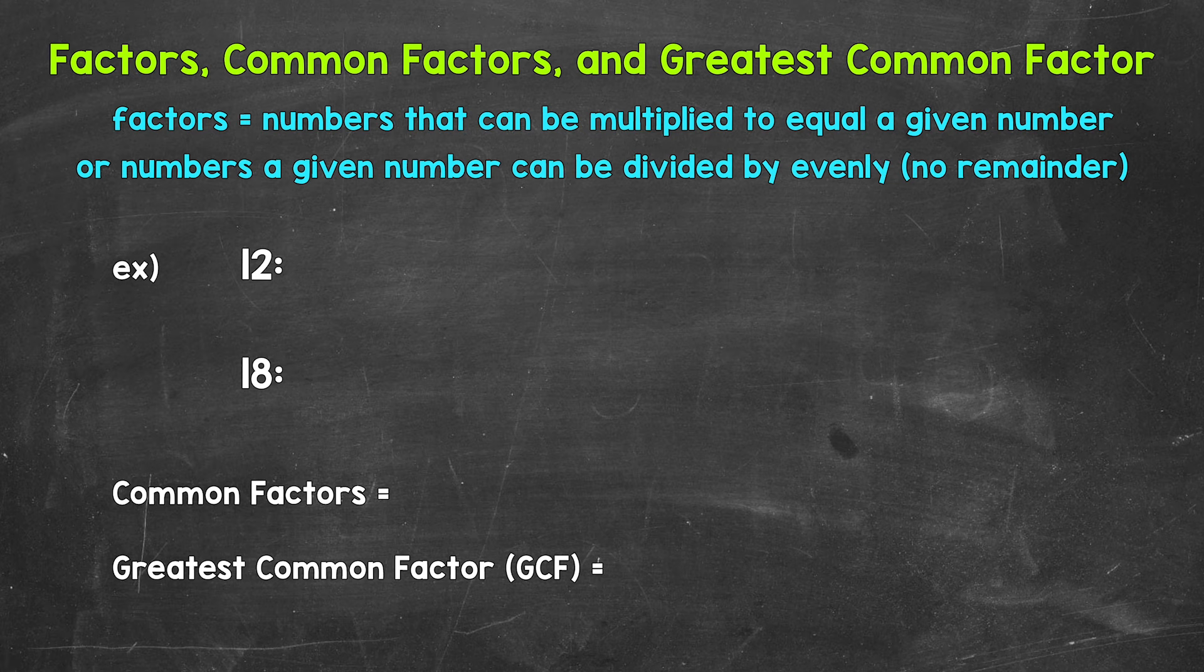Let's start with the factors of 12, and my suggestion would be to always start with 1 and the number itself. We can think of factors in terms of pairs. So 1 times 12 equals 12, or we can divide 12 by those factors. I'm going to write 1 and 12 with a gap in between so we can write the other factors in between 1 and 12 in order.